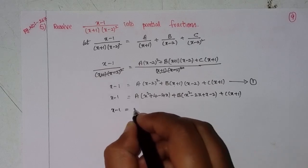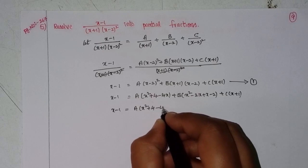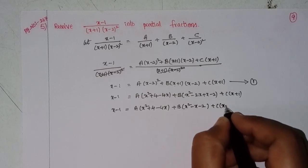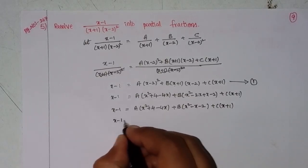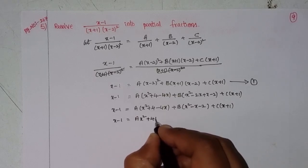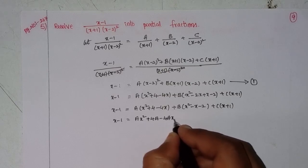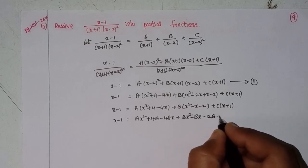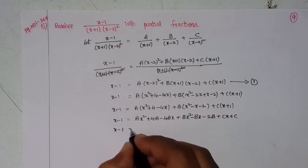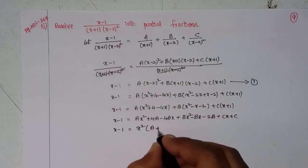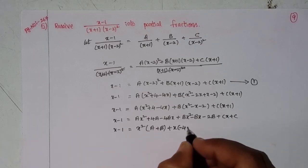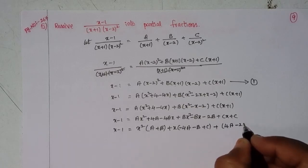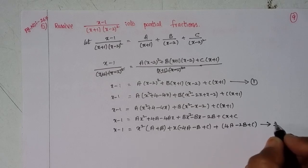Expanding: x minus 1 equals A(x² + 4 minus 4x) plus B(x² minus x minus 2) plus C(x plus 1). This gives: x minus 1 equals Ax² plus 4A minus 4Ax plus Bx² minus Bx minus 2B plus Cx plus C. Comparing x² coefficients: 0 equals A plus B. Comparing x coefficients: 1 equals minus 4A minus B plus C. Comparing constants: minus 1 equals 4A minus 2B plus C. This is Equation 2.